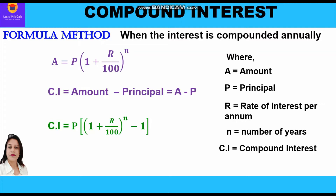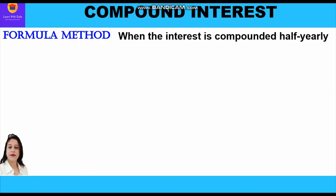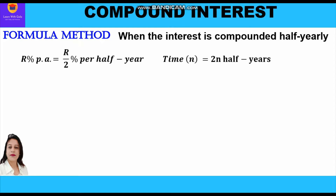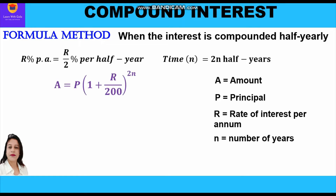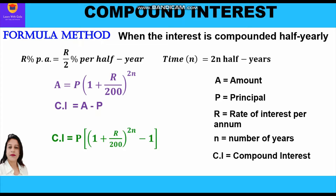There is also a direct formula for compound interest: CI = P[(1 + r/100)^n − 1]. When interest is compounded half yearly, the rate percent per annum becomes r/2 percent per half year, and n becomes 2n half years. So the amount formula changes to A = P(1 + r/200)^(2n), and CI = P[(1 + r/200)^(2n) − 1].